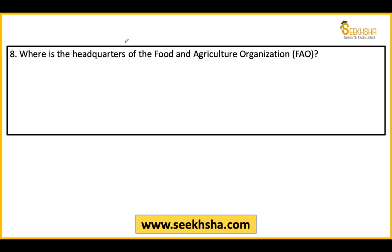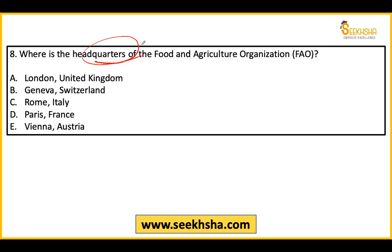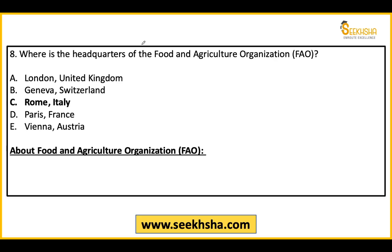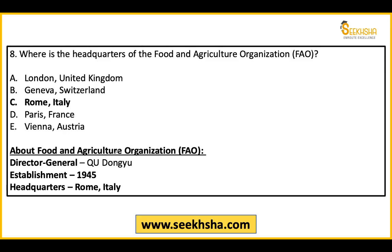Eighth question asks about the headquarters of an organization — this is an easy question if you know it. The right answer is Rome, Italy. The organization was established in 1945, and the current Director General is also worth noting. This refers to the Food and Agriculture Organization (FAO).